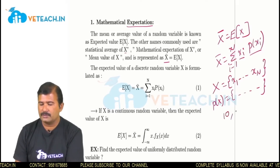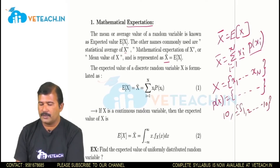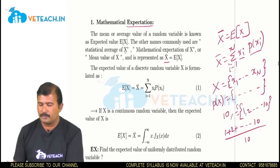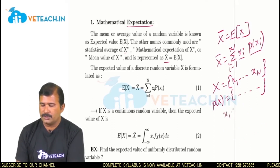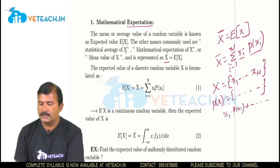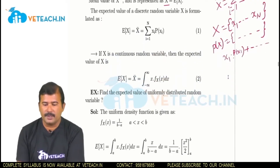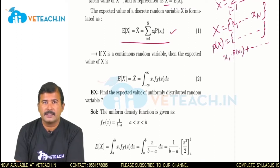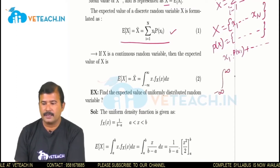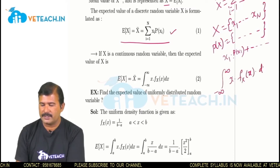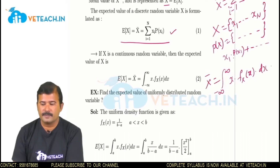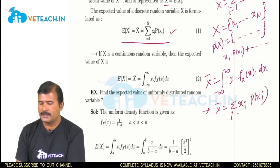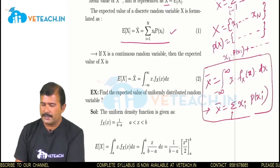In normal average, if we have 10 values like 1 through 10, the normal average is the summation of all values divided by the number of values. Similarly, when probability is involved, we write x_1 into the corresponding probability of x_1. If x is a continuous random variable, the expected value is the integral over x into the density function f_X(x) dx. So these two are the expressions: for discrete it is summation of x_i times P(x_i); for continuous it is integration of x times f_X(x) dx.